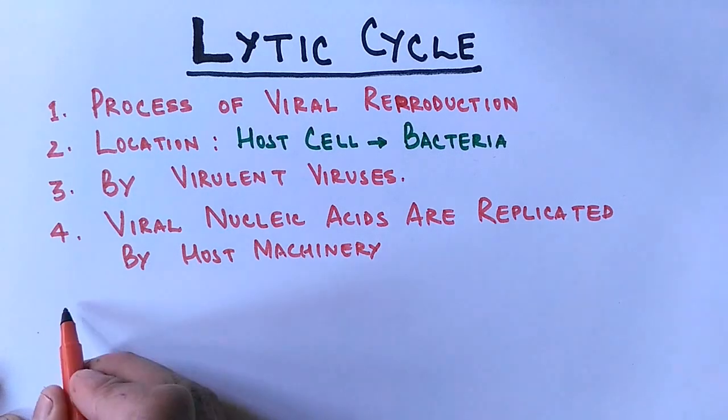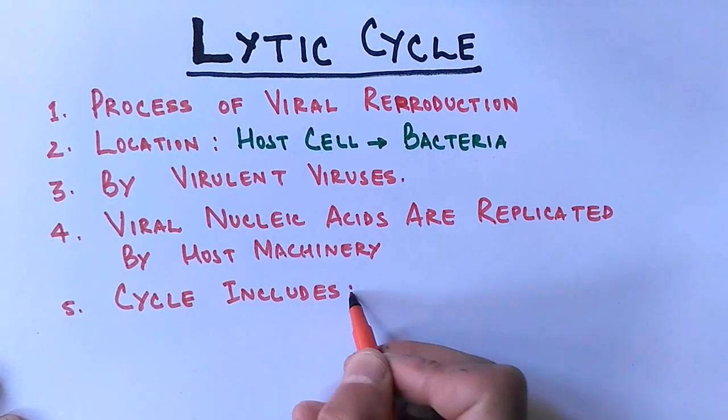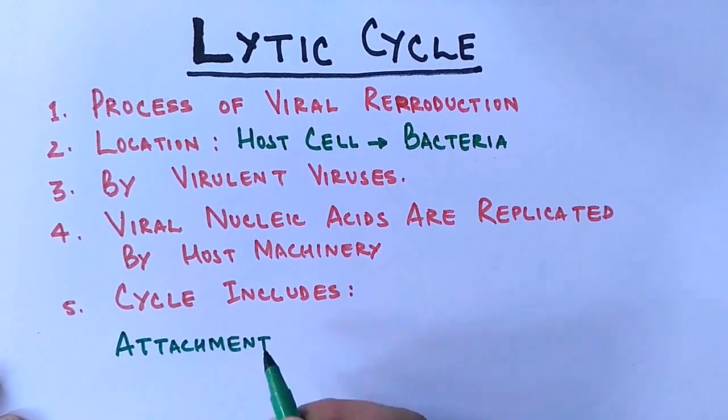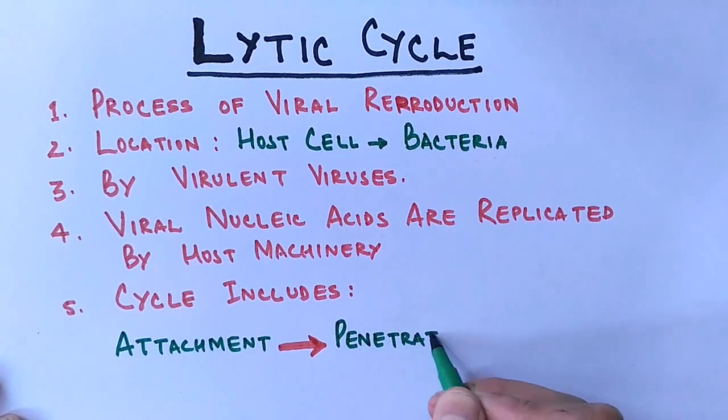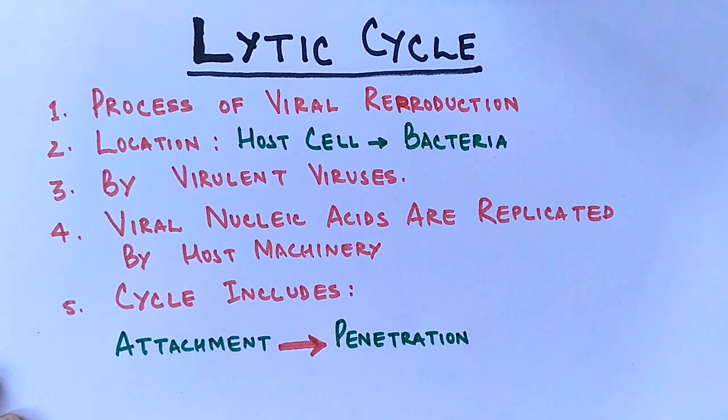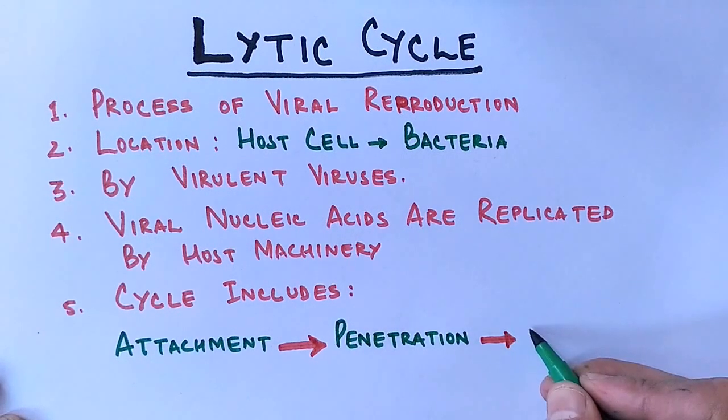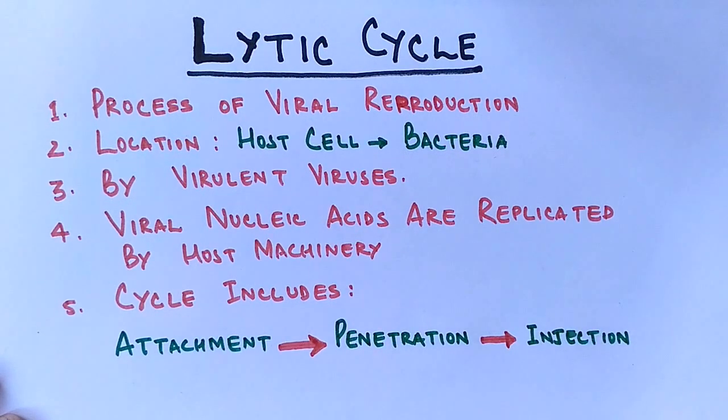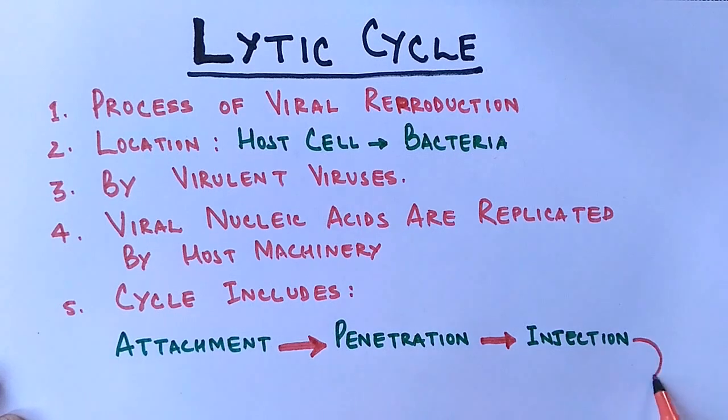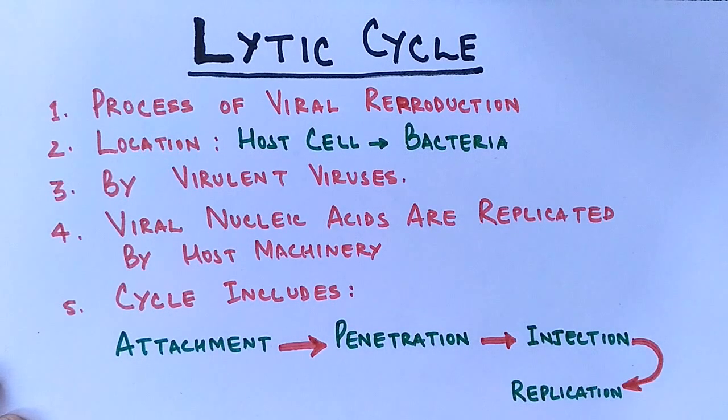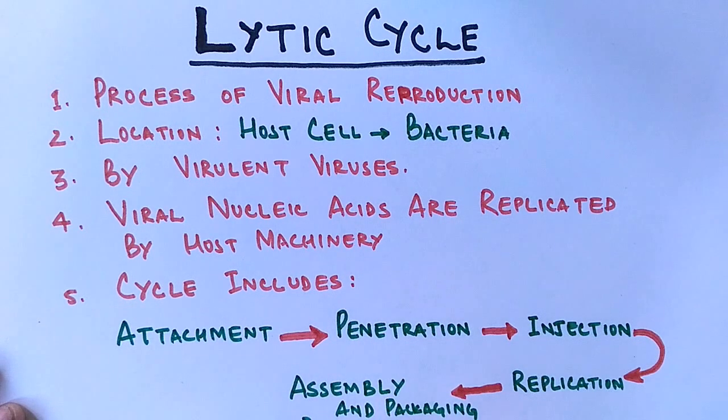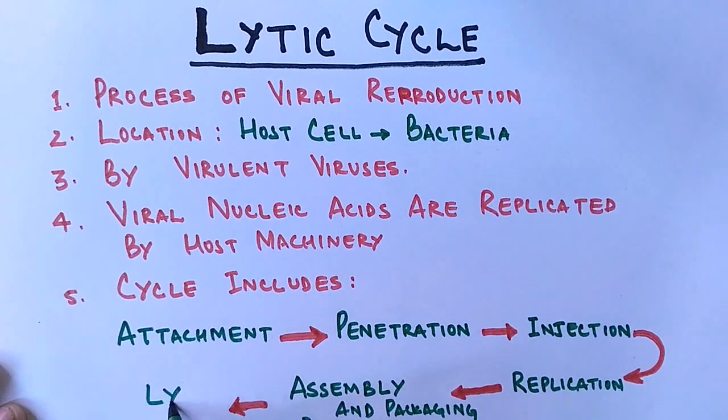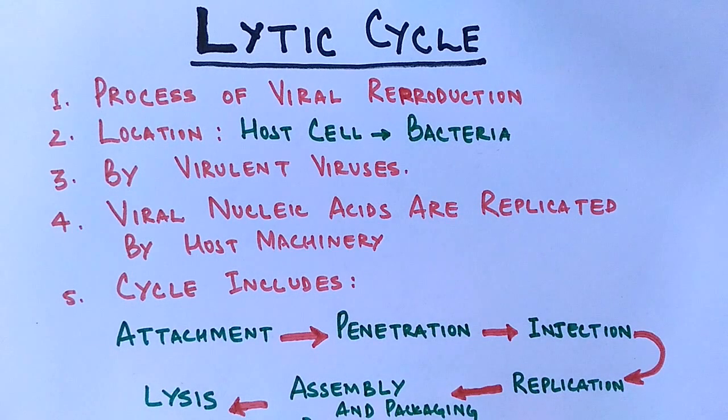This lytic cycle includes first attachment, where a virus attaches itself to the host cell. After attachment there is penetration of certain components from virus into the host cell. After penetration there is injection of genetic material of virus into the host cell. After injection, this genetic material is replicated in the host cell by using the host machinery. After replication, there is assembly and packaging of viral components which includes capsids and certain proteins. And ultimately there is cell lysis, cell degradation at the end of this cycle where these viruses are free to infect other cells.